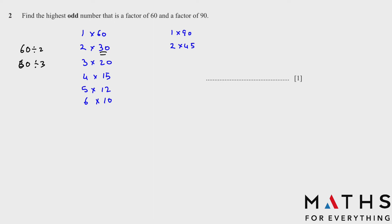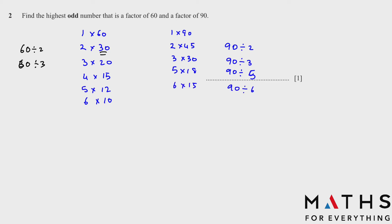For 90: 90÷2=45, 90÷3=30, 90÷4 gives a decimal so we skip it, 90÷5=18, 90÷6=15, so 6×15. 7, 8 won't divide evenly, then 9×10. Looking at both lists, the highest odd number common to both 60 and 90 is 15. That's your answer.